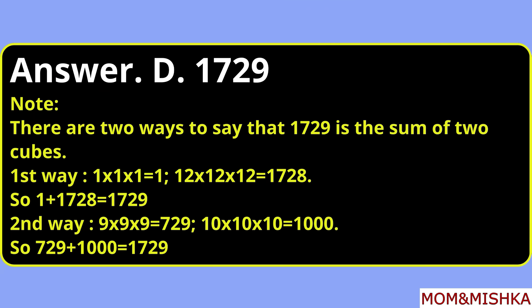Which number is known as the Hardy-Ramanujan number? The answer is 1729. Option D. The Hardy-Ramanujan number is any number that can be represented as the sum of cubes of two numbers in two ways. For example, 1729 equals the sum of the cube of 1 and the cube of 12, and also equals the sum of the cube of 9 and the cube of 10.